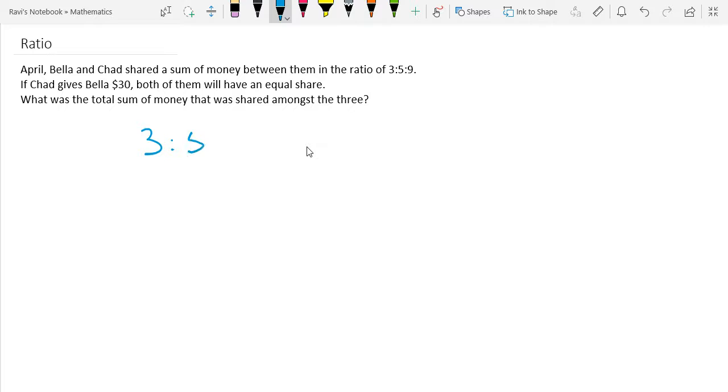So we have 3 to 5 to 9. So this is April and this is Bella and this is Chad. And we are given this information that if Chad gives Bella $30, both of them would have an equal share.